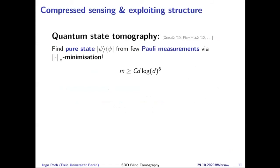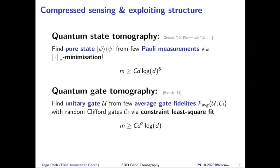Original compressed sensing examples include quantum state tomography: you can find an arbitrary pure state from M·D·log(D) Pauli measurement expectation values via nuclear norm minimization, instead of D² measurements. Another example is gate tomography: you can find a unitary gate from just D² average gate fidelities with respect to random Clifford matrices via constrained least squares. These average gate fidelities can be obtained from randomized benchmarking experiments, allowing reconstruction of an arbitrary unitary gate.